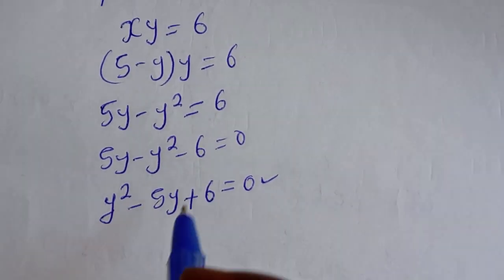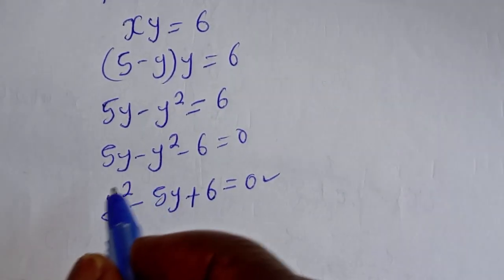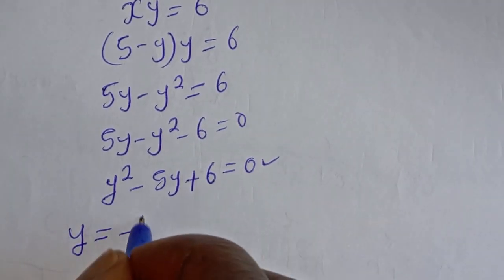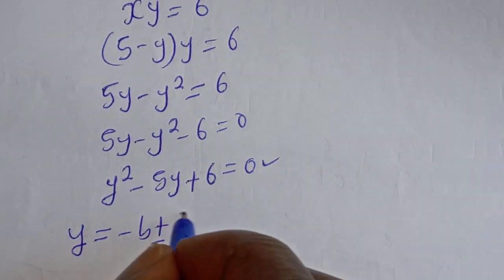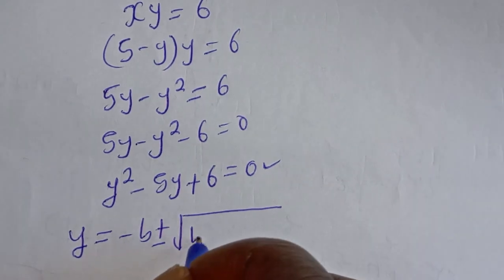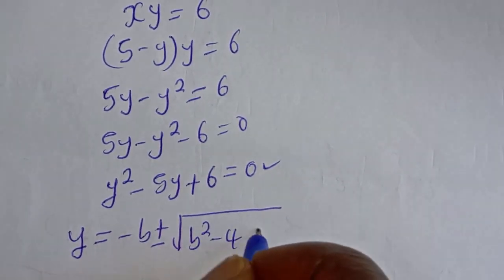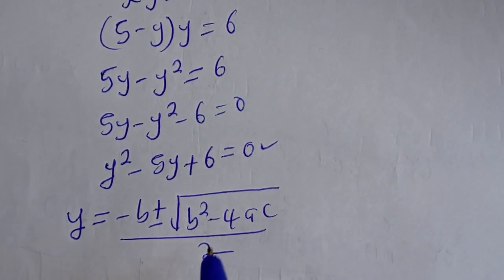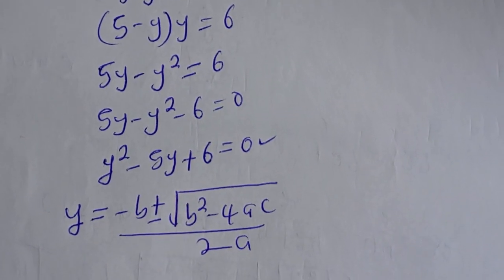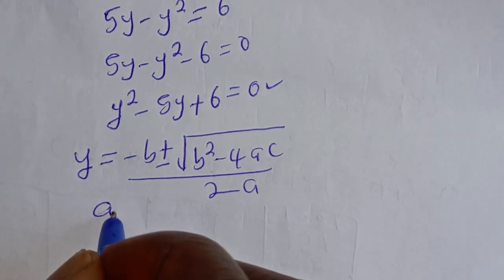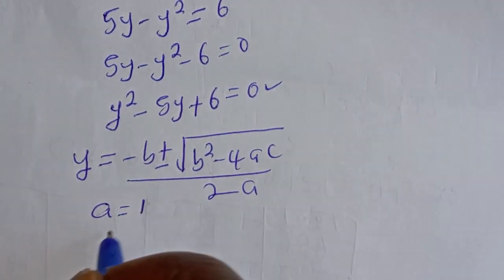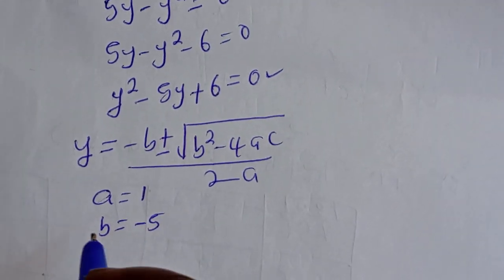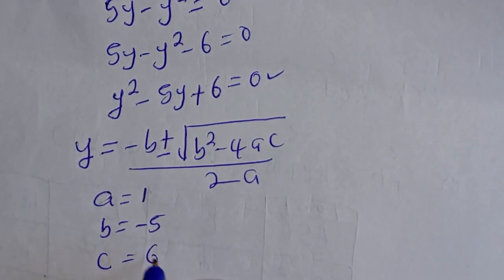Let's solve this using the quadratic general formula. The quadratic general formula gives us Y is equal to minus B plus or minus the square root of B squared minus 4AC, all over 2A. From this equation, A is equal to 1, B is equal to minus 5, and C is equal to 6.